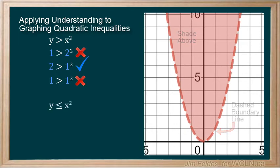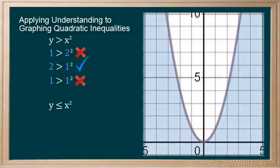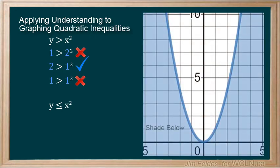If we reverse the inequality sign, we of course change our solution. y less than or equal to x squared would of course result in a graph that shades below a solid boundary line.